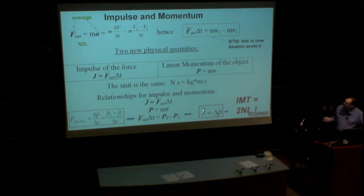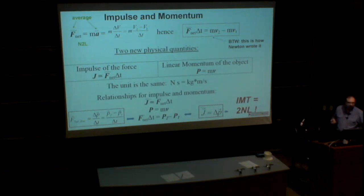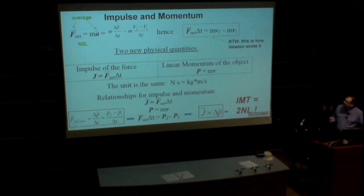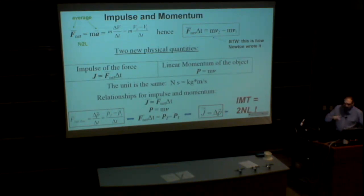We use little arrows to demonstrate that a physical quantity is a vector. People don't really use horizontal bars in physics to indicate the word average. So the average force equals mass times average acceleration. The average acceleration is final velocity minus initial velocity divided by time. So we keep in mind that the force in the definition of the impulse represents the average value if the force changes.